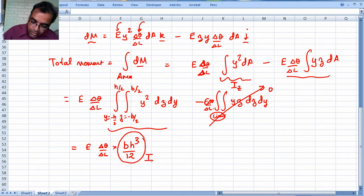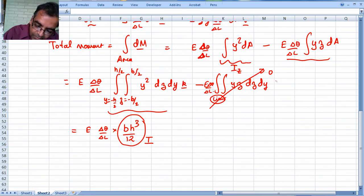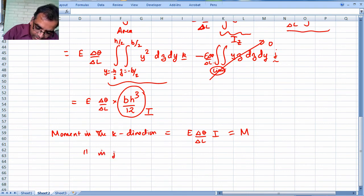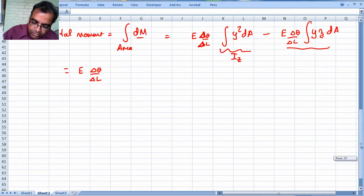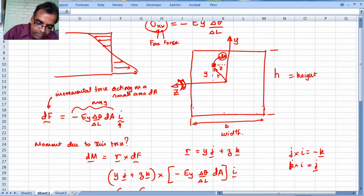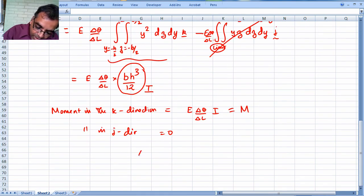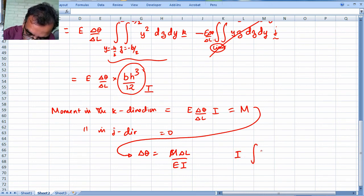What did I get? Notice this is in the k direction, this is in the j direction. So I got moment in the k direction is E delta theta over delta l times I, and this is what we call M. Moment in the j direction equals zero. Does that make sense to you? We only applied moment in the k direction - there is no moment in the j direction, so obviously that is correct. This will give me a very nice result: delta theta equal to M delta l over EI, and I is integral y squared da.